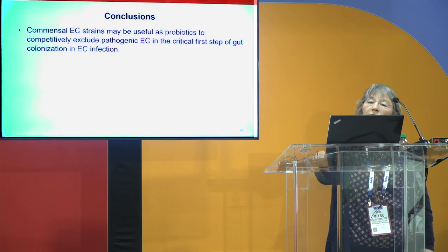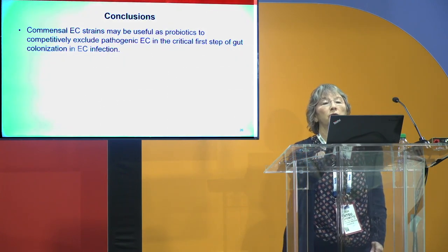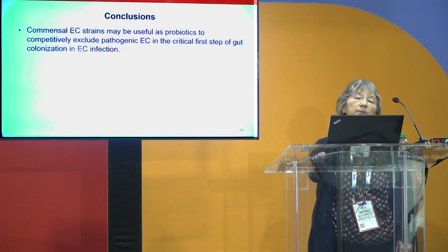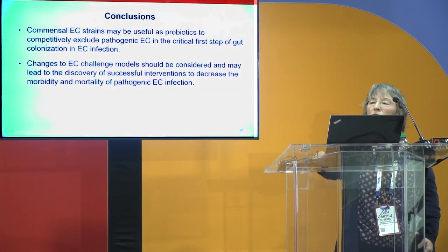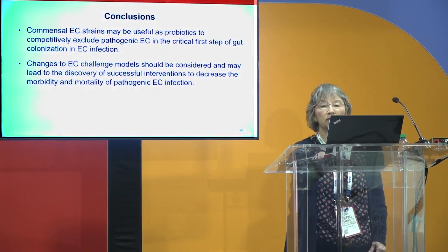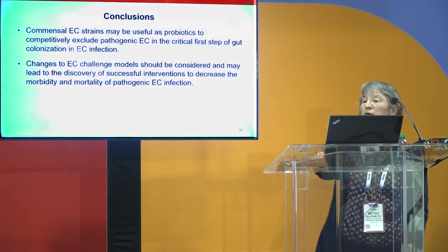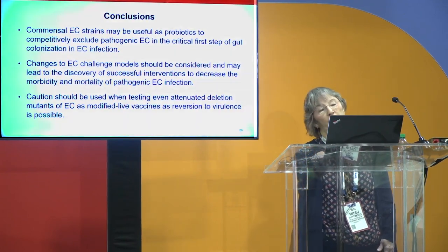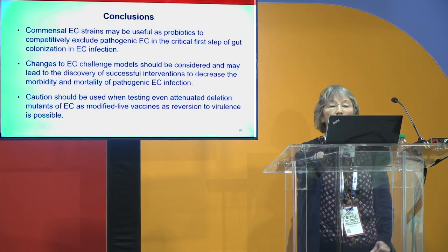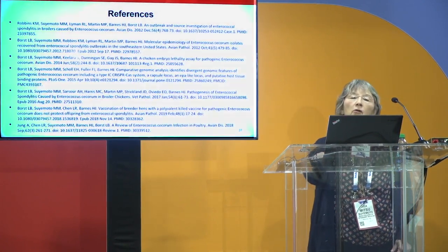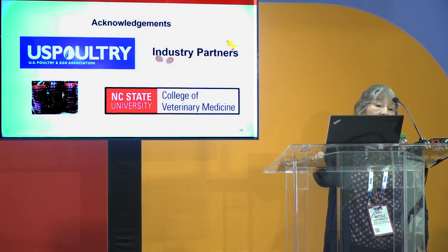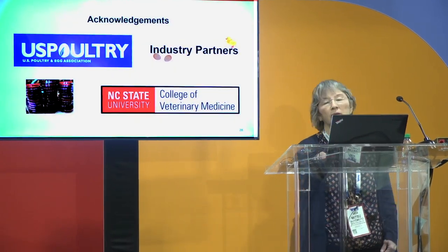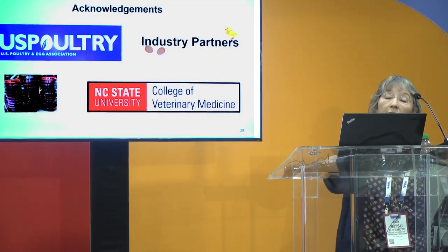In conclusion, commensal Enterococcus cecorum strains may be useful as probiotics to competitively exclude the pathogenic strains in that first critical step of gut colonization. Changes to the EC model should be considered to make it more sensitive, as it may lead to discovery of successful interventions to decrease mortality from pathogenic E. cecorum infection. Caution should be used when testing even attenuated deletion mutants as modified live vaccines, as reversion to virulence is possible. I again would like to thank the U.S. Poultry and Egg Association for supporting this project; their funding has done an incredible amount to advance foundational knowledge of pathogenic E. cecorum.